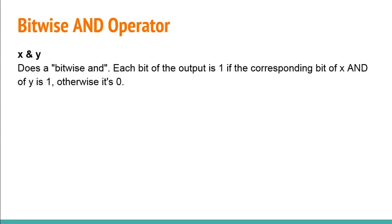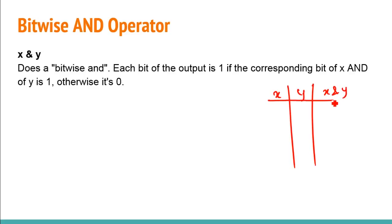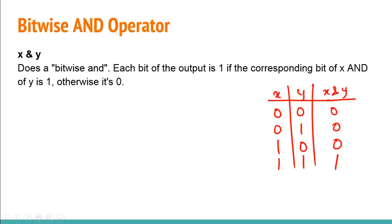Next we have the bitwise AND operator. Each bit of the output is one if the corresponding bits of both x and y are one, otherwise it is zero. Here's a simple truth table: 0 AND 0 = 0, 1 AND 0 = 0, 0 AND 1 = 0, and 1 AND 1 = 1.